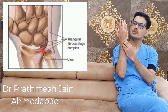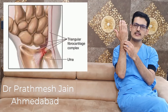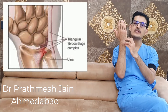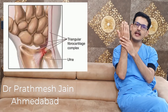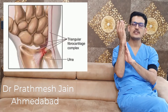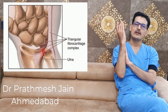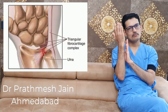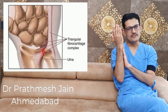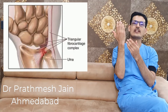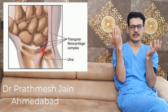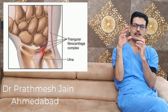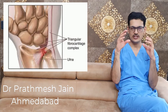The TFCC has two types of attachments: the capsular attachments and the foveal attachment. The foveal attachment attaches to the ulnar head, and the capsular attachment attaches to the wrist capsule. There are also ligaments connecting the TFCC to other structures, such as the lunotriquetral ligaments. It is a disc-like collagenous structure.